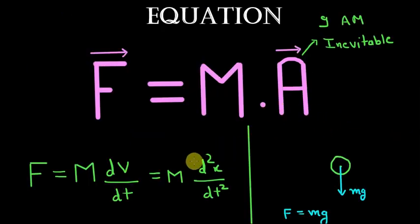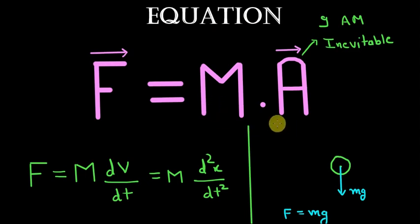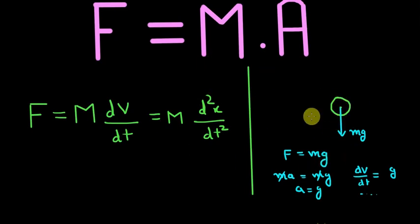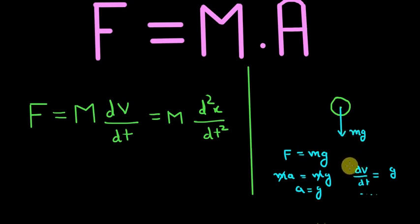If you have studied classical mechanics, you know Newton's second law — the most important equation in classical mechanics. It tells us that the resultant force on a particle equals its mass times acceleration. Written as a differential equation with position x as the variable, if we solve it for a freely falling body where the only force is weight, we get acceleration equal to g, then velocity, position, momentum — everything we need.